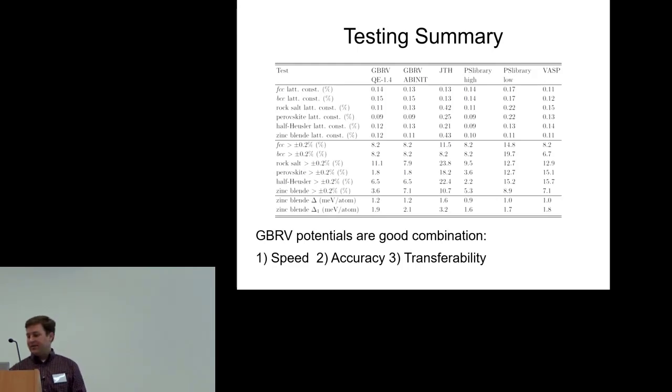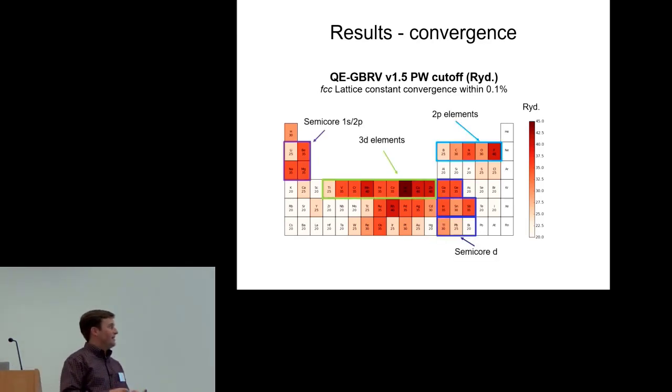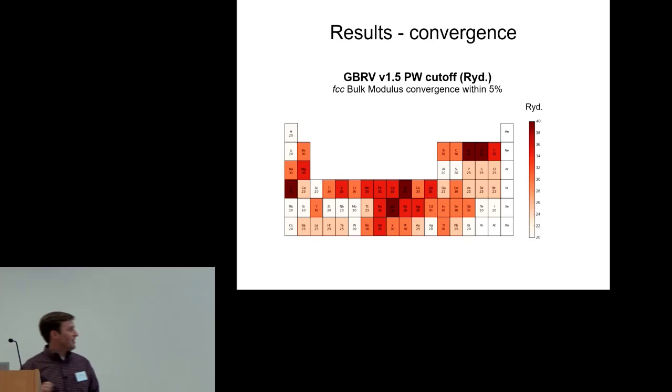The GBRV pseudo potentials are basically a good combination of speed, precision, and transferability. Here's a few more details on the convergence results. This is the plane wave cutoff necessary to converge the lattice constant of the FCC structure within 0.1%. We can see typical patterns you'd expect: 2P elements, 3D elements, and then elements with semi-core states are some of the most difficult to converge with a low plane wave cutoff. There's a similar pattern converging the bulk modulus within 5%.